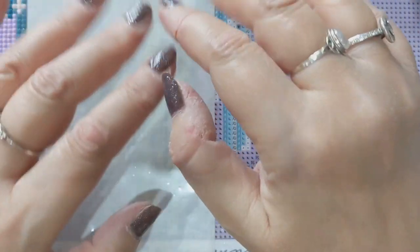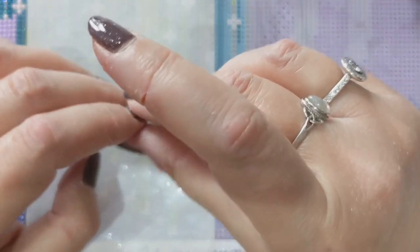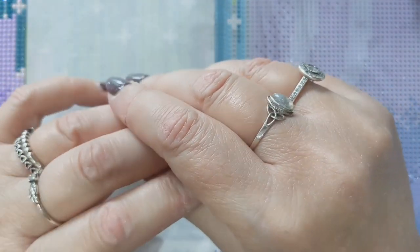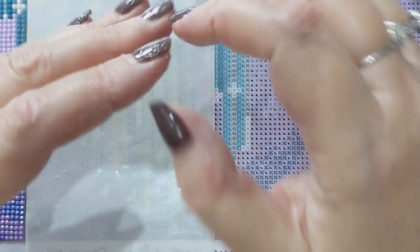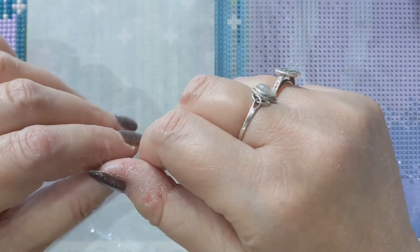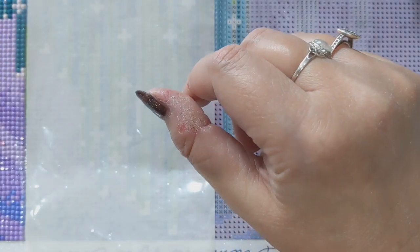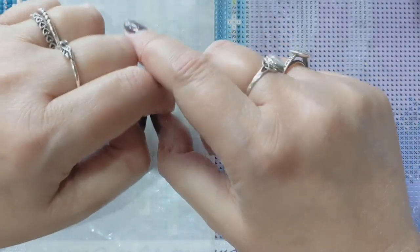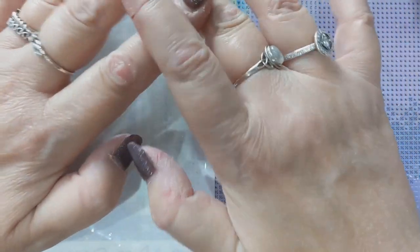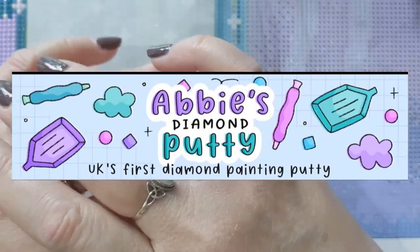But I could never find anyone in the UK that made putty. The only sellers I could find on Etsy and places like that were American sellers, and although their prices were great, the shipping to come to the UK was a lot more than the actual putty itself. So when I came across Abby's Diamond Putty, I was absolutely over the moon and couldn't wait to try it.